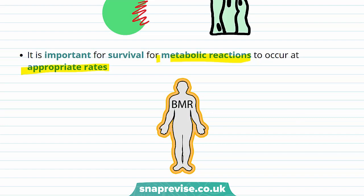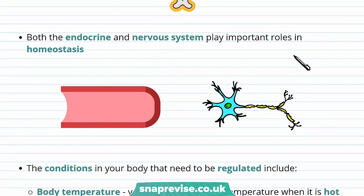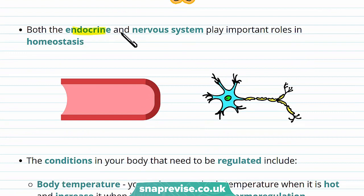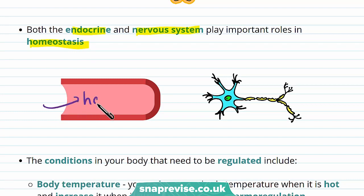How do we keep everything constant? We use both the endocrine and the nervous system in homeostasis. The endocrine system transmits information through hormones, and these travel in the blood. The nervous system uses nerve cells, and these transfer information as electrical impulses.